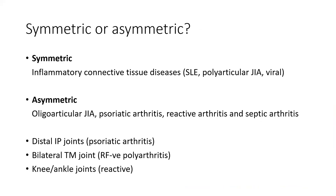Symmetric joint involvement is typically seen in polyarticular JIA and SLE or viral arthritis. Asymmetric involvement is seen in oligoarticular JIA, psoriatic arthritis, reactive arthritis, and septic arthritis. Distal interphalangeal joints are involved in psoriatic arthritis; temporomandibular joint in RF-negative polyarthritis; and knee and ankle arthritis without systemic manifestations presenting with a limp suggests reactive arthritis.